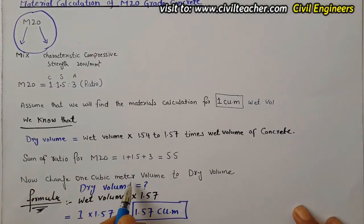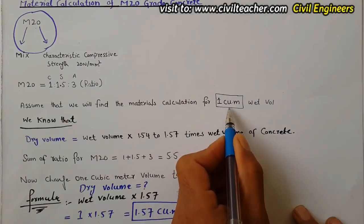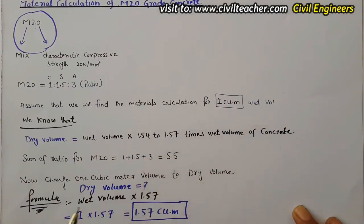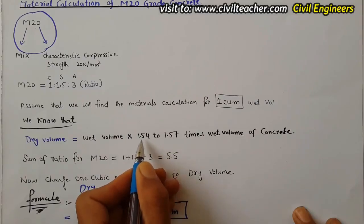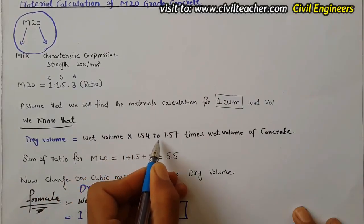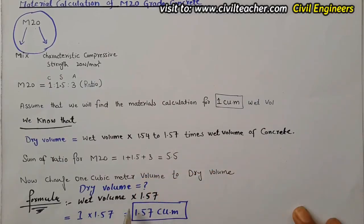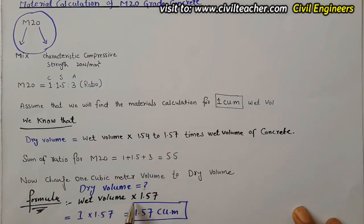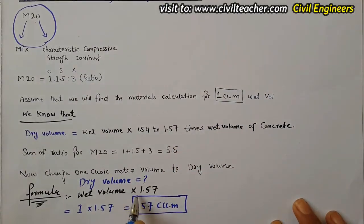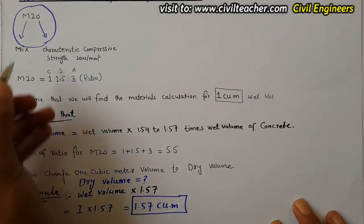Now convert one cubic meter wet volume to dry volume. Dry volume equals wet volume multiplied by 1.57. So the wet volume is 1 cubic meter, therefore: 1 × 1.57 = 1.57 cubic meters. The total dry volume for M20 grade of concrete is 1.57 m³.